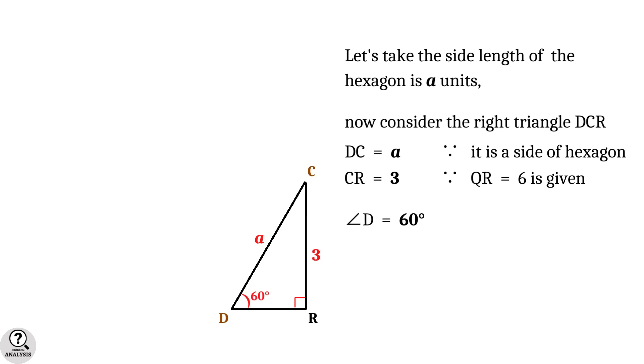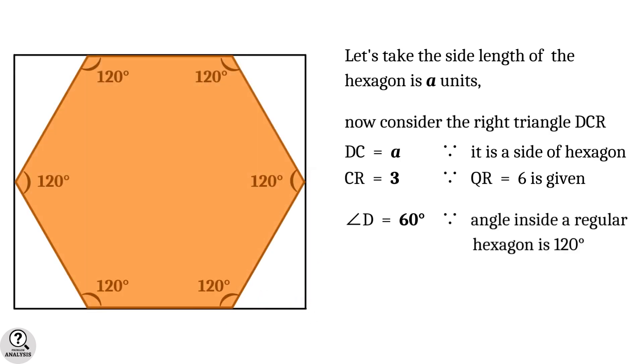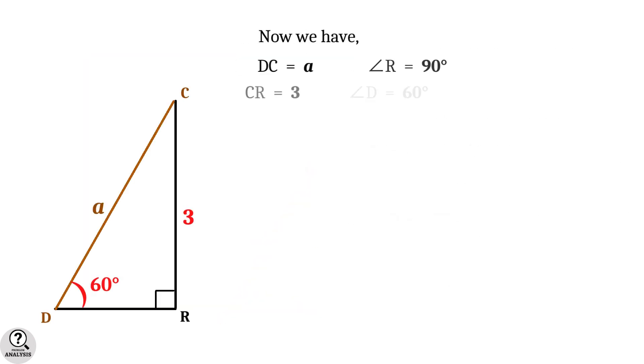And also the angle D equals 60 degrees, since the angle inside a regular hexagon is 120 degrees, and therefore angle CDR equals 180° minus 120°, which is equal to 60°. Now we have DC = a units, CR = 3 units, angle R = 90°,